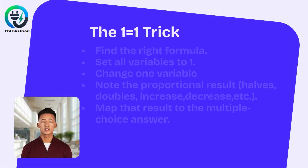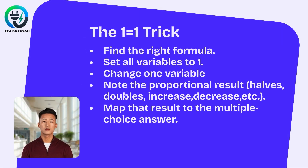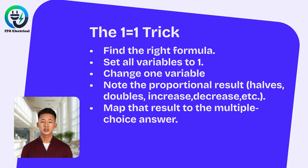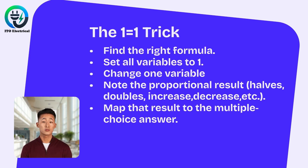The one is equal to one trick is a fast way to handle multiple choice questions without doing heavy calculations. You set all variables — voltage, current, resistance, etc. — to one, then adjust only one variable and see if the outcome doubles, halves, or stays the same. Let's work out a few questions.